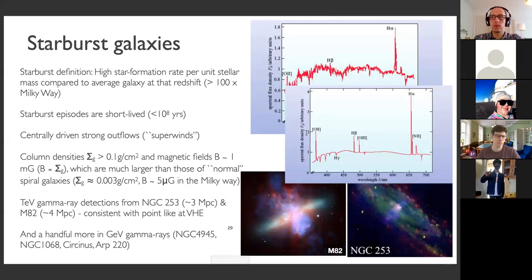Now let me quickly jump to starburst galaxies — we have only 15 minutes. This is a totally different type of source. We talked about transient sources; starburst galaxies are the opposite. They are not particularly long-lived — only 10^8 years, which is a short time for astrophysical scales — but they are basically steady phenomena.